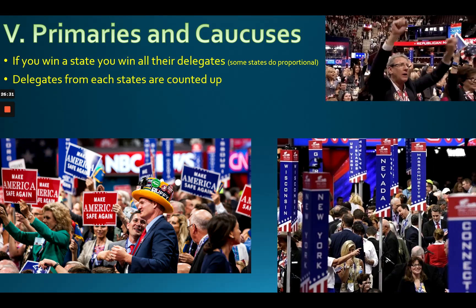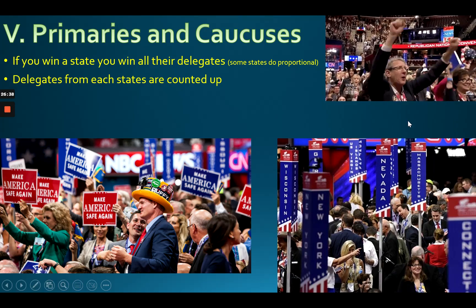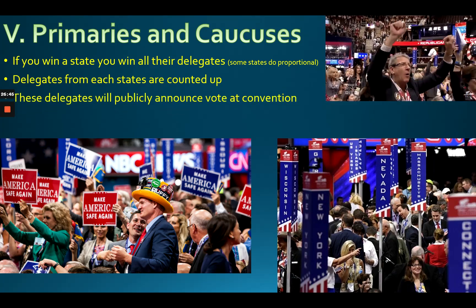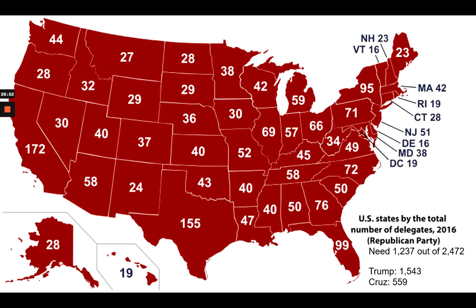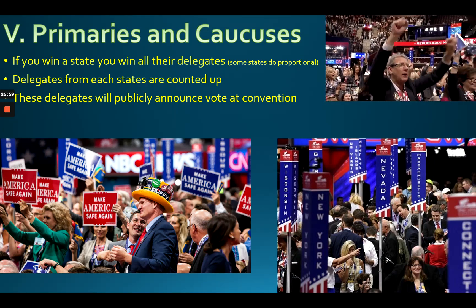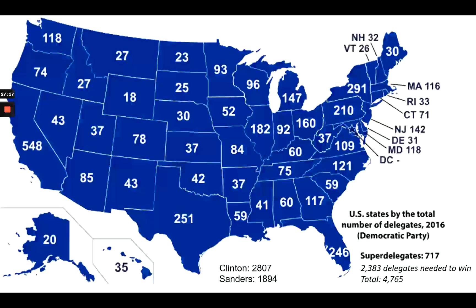When you win a state primary, you win all their delegates — winner-take-all system. At the convention, they count all the delegate votes and announce it publicly in a big pep rally. They add them up, and the candidate with the most votes is the one who runs in the general election. These delegate counts show how many delegates each state sends to the convention.